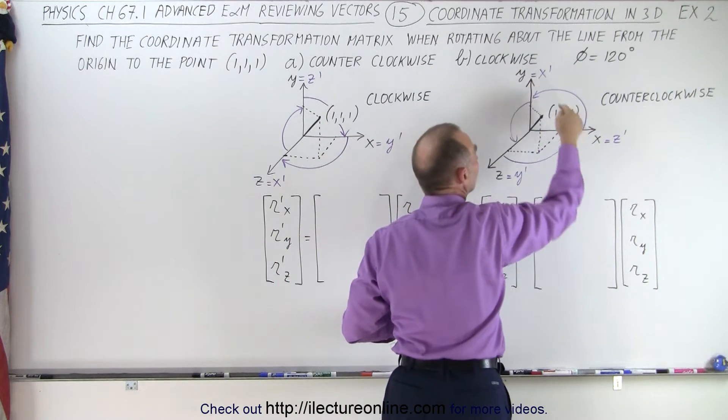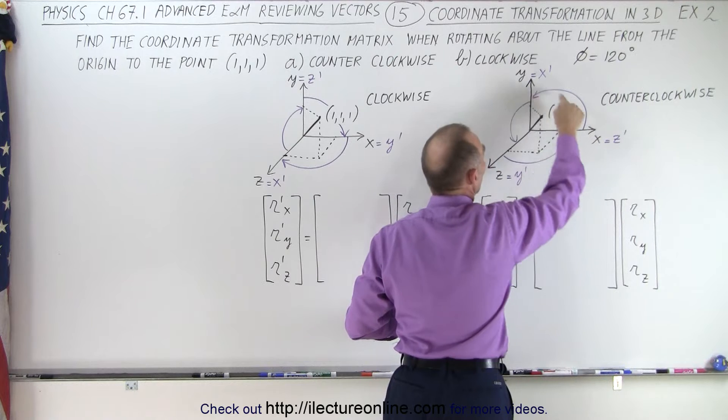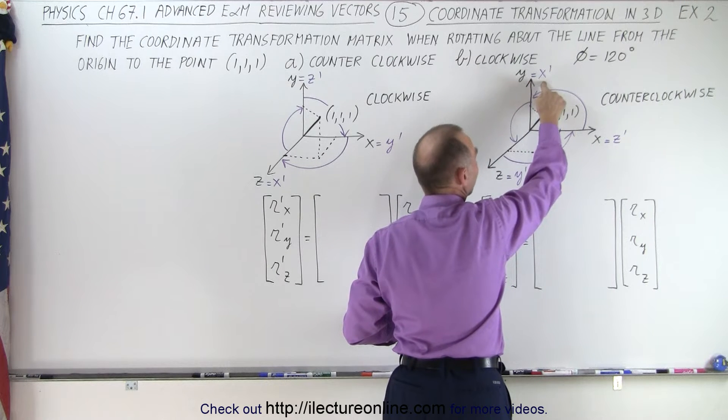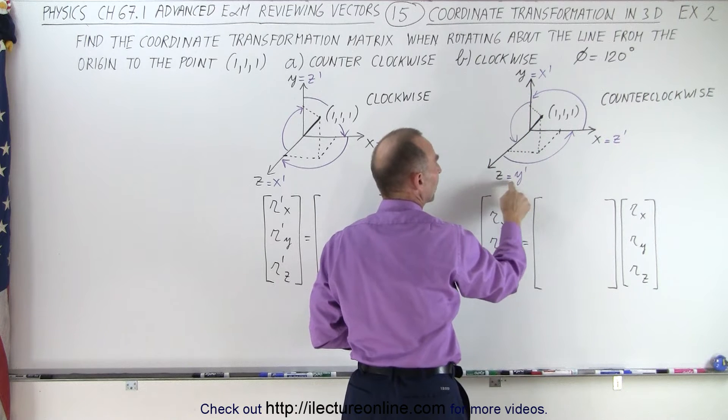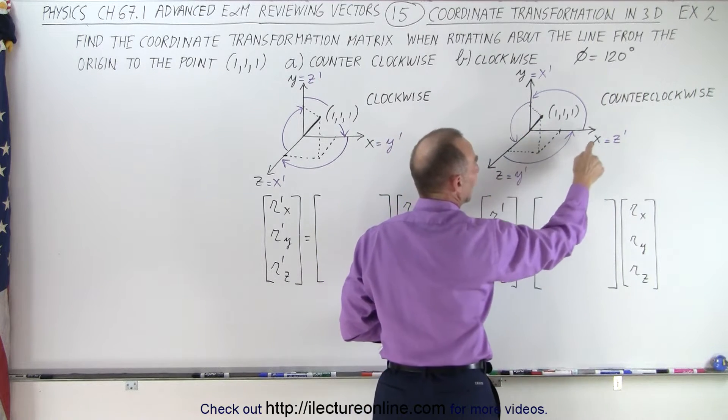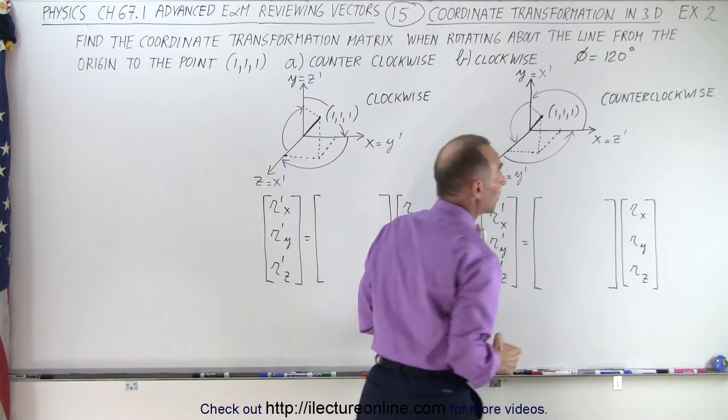It turns out because we're doing it about a line that's sticking out at an angle from the origin, 120 degree rotation will put the X axis where the Y axis was. So Y now becomes the new X prime axis. It will put the Y axis where the Z axis was. So Z now becomes the Y prime axis. It will put the Z axis where the X axis was. So X equals Z prime axis.